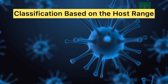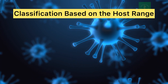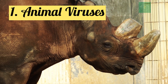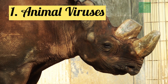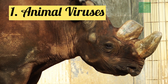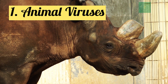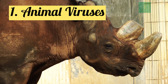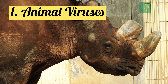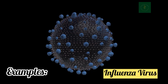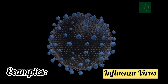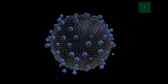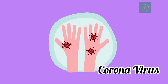Classification based on the host range. 1. Animal Viruses: viruses which infect by invading the cells of animals or humans. Examples include Influenza Virus and Coronavirus.